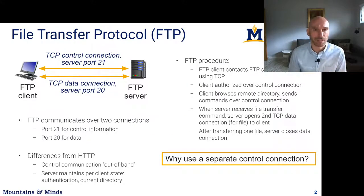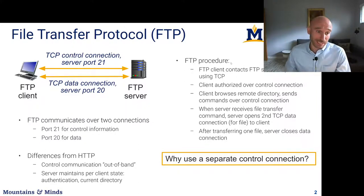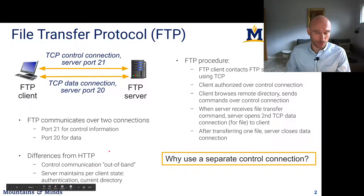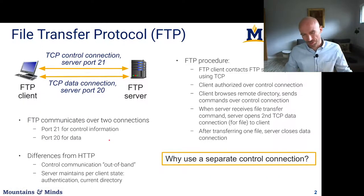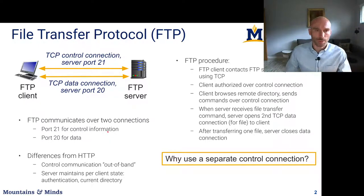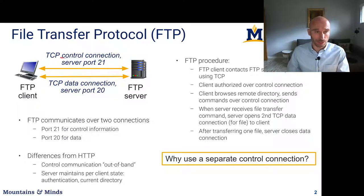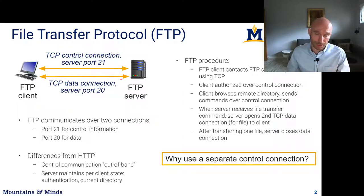First we have the File Transfer Protocol, which was designed to transfer files between two different computer nodes. This is part of the research data transfer in the early Internet. What's interesting about this protocol is that it actually maintains two different connections: a control connection between a client and a server over port 21 using TCP, and data transfers over port 20, so both of these ports would have to be open in the firewall.